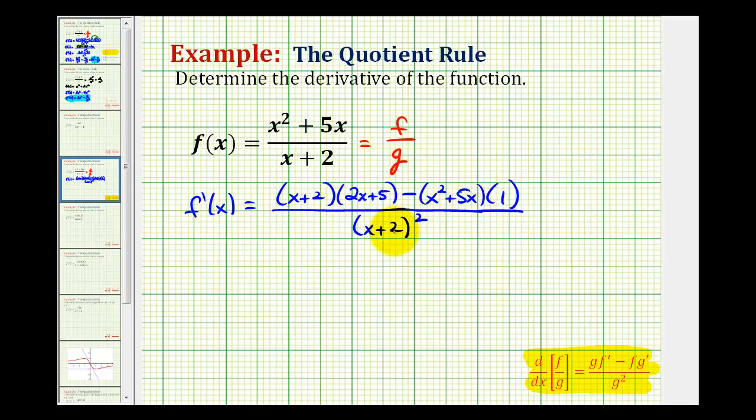Now that we have the derivative function, the rest is algebra. So we need to simplify this as much as possible. Denominator is going to stay the same and then we're going to multiply out the numerator and combine like terms.